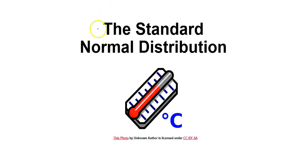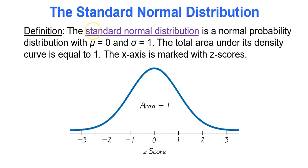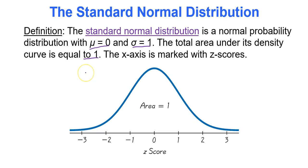This is a video covering the standard normal distribution. The standard normal distribution is a normal probability distribution — remember that means bell-shaped data — with a mean of 0 (mu equals 0) and a standard deviation of 1 (sigma equals 1). The total area under its density curve is equal to 1, because area represents probability. The x-axis is marked with z-scores, so all data values are converted to z-scores. That's what it means to standardize a distribution — that's why it's called the standard normal distribution.